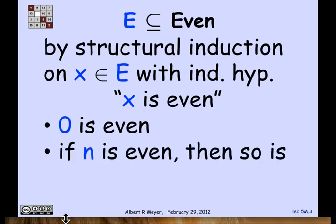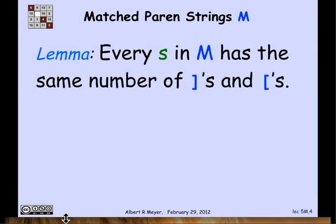Then we need to show that assuming the structural induction hypothesis that n is even, when we apply the constructor n plus 2, it's even. Obviously it is. Or if we apply the constructor minus n, that's also even. And it is as well. And that's why structural induction tells us that in fact every string in the set E is even.